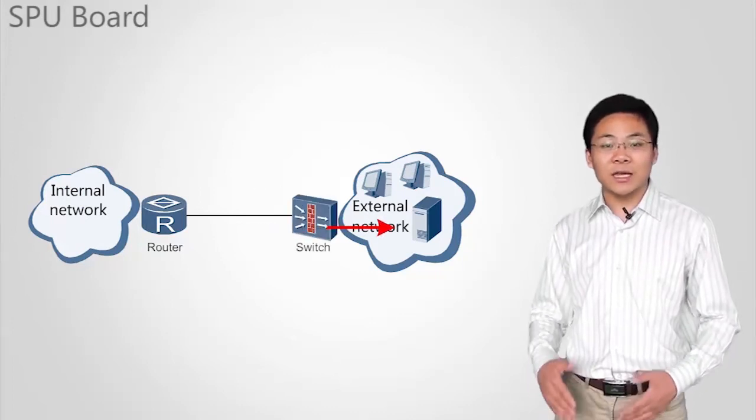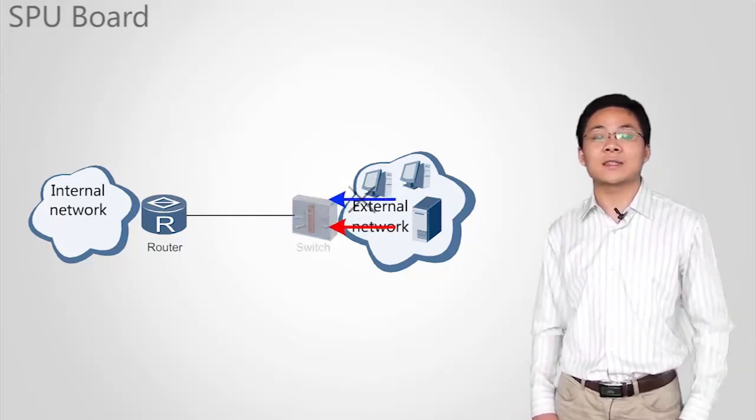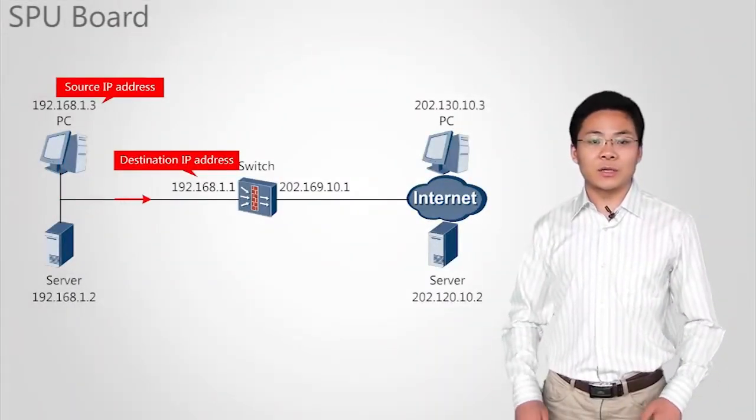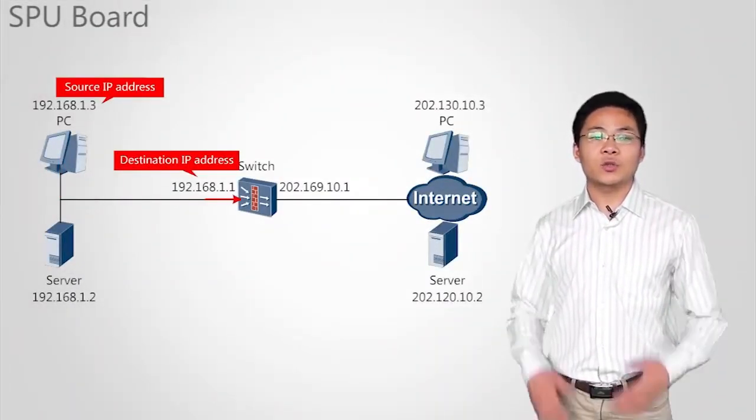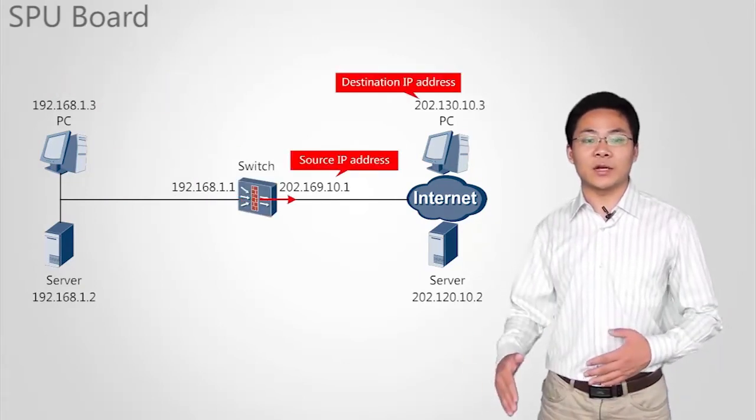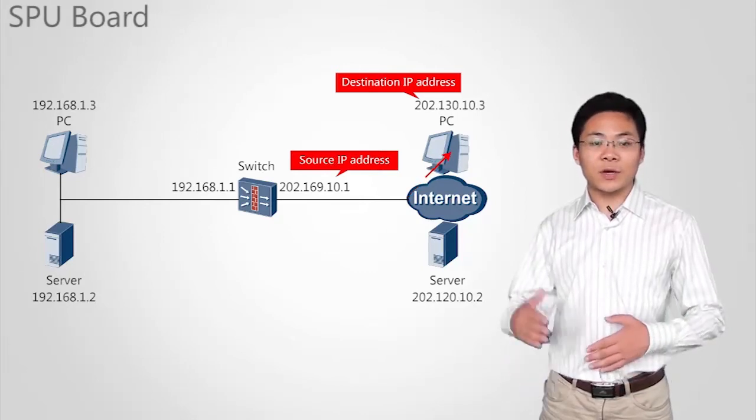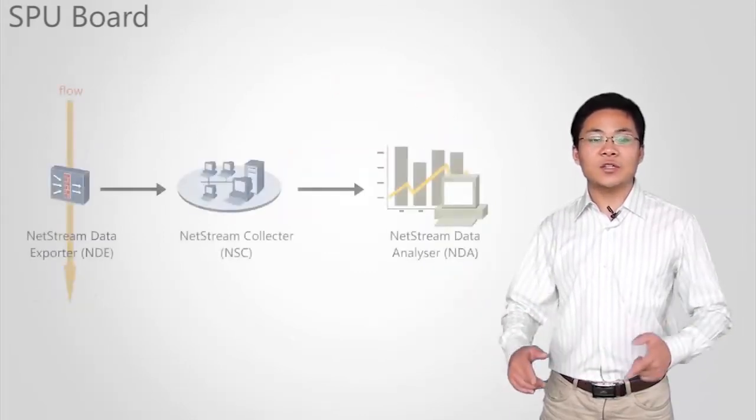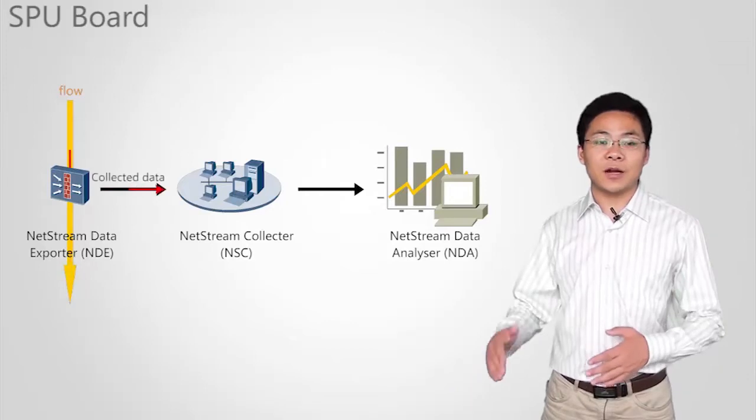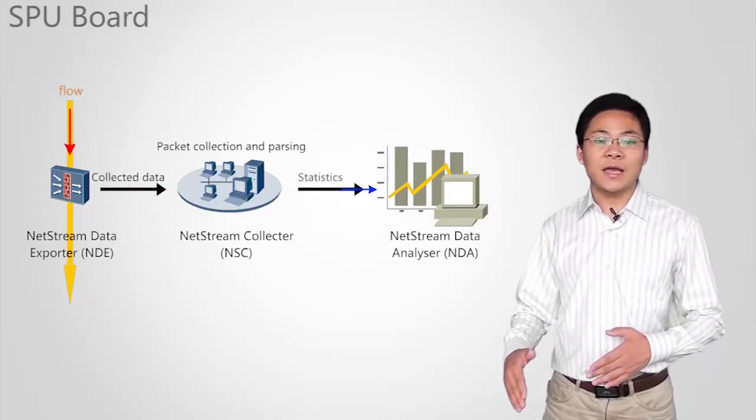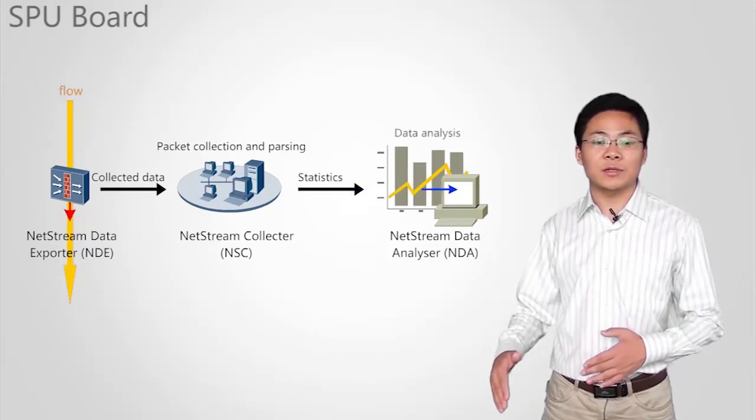Network address translation, also called address agent, translates private network addresses into public network addresses. NAT enables hosts on a private network to access the public network. NETStream is a series of unidirectional data packets that travel through network devices and have certain common attributes.